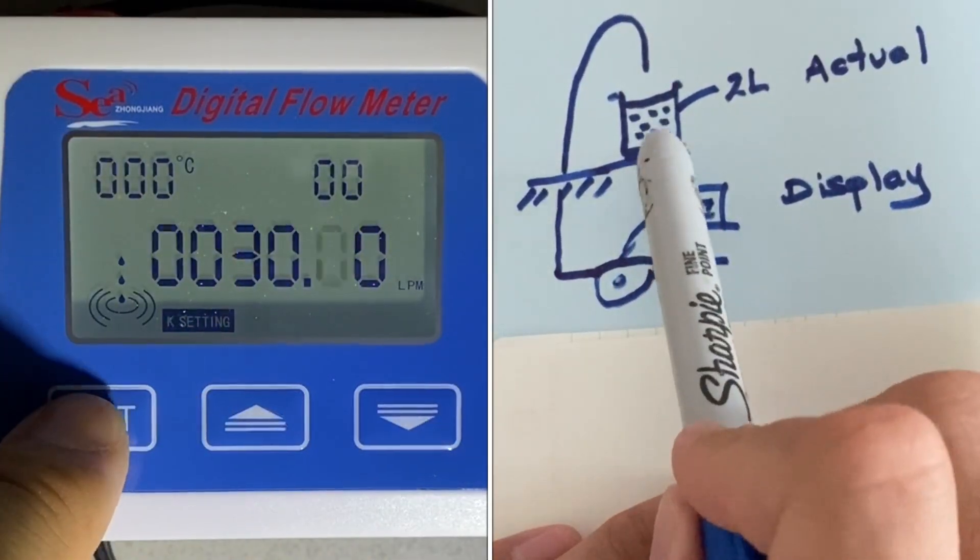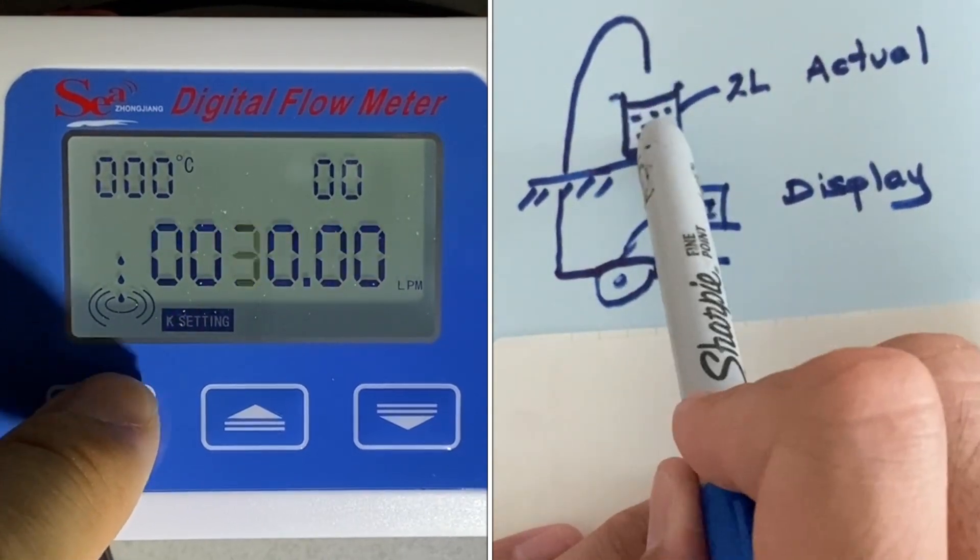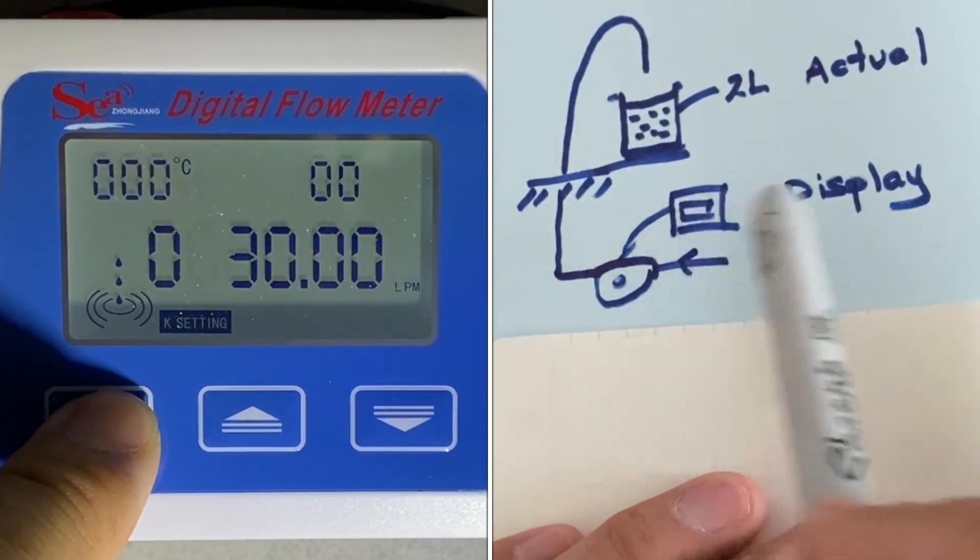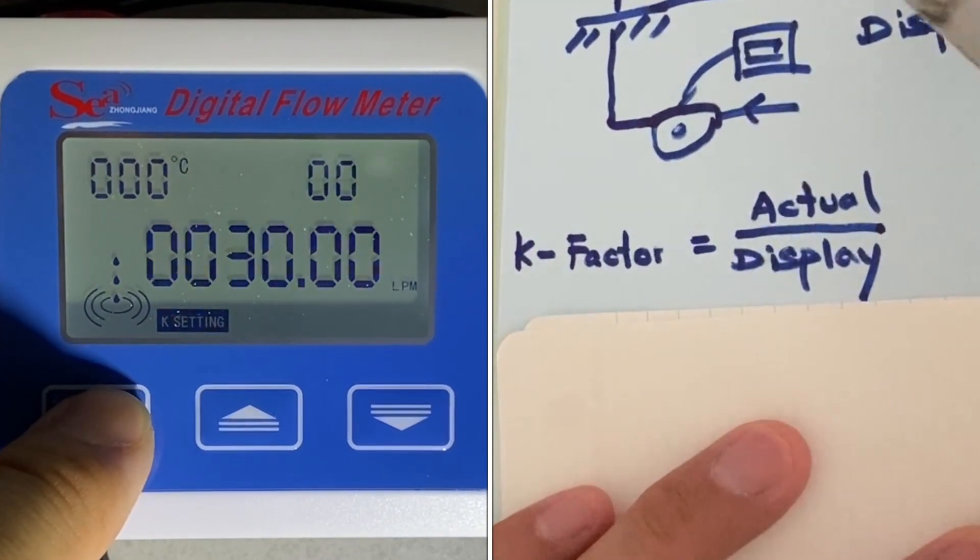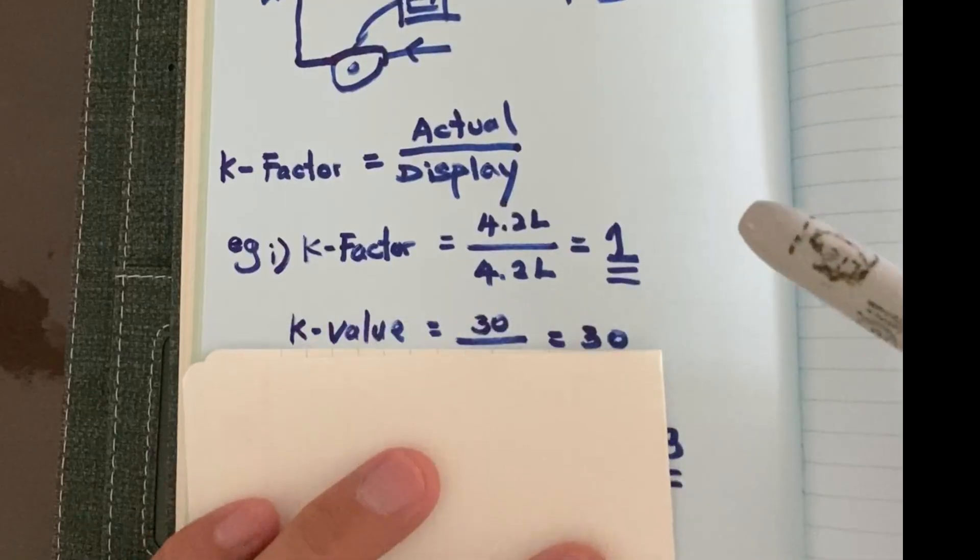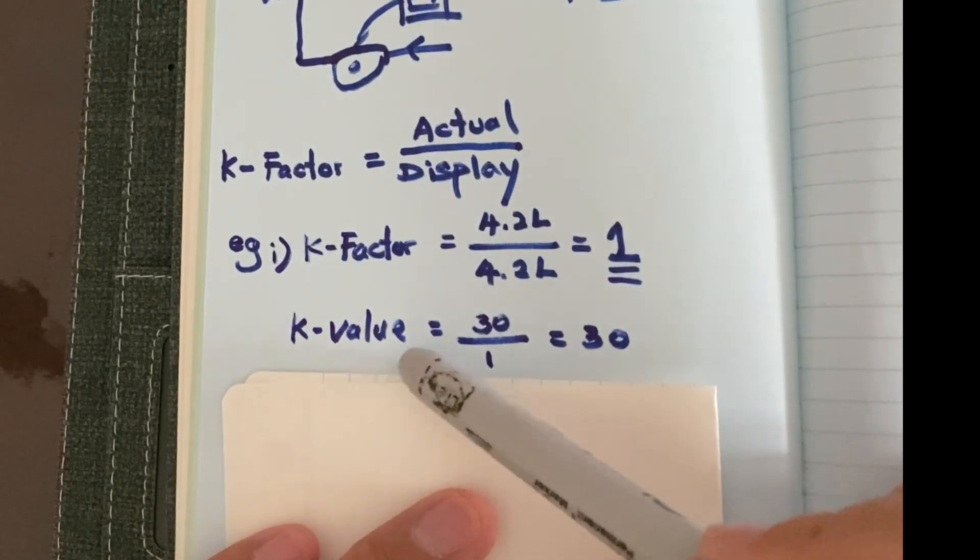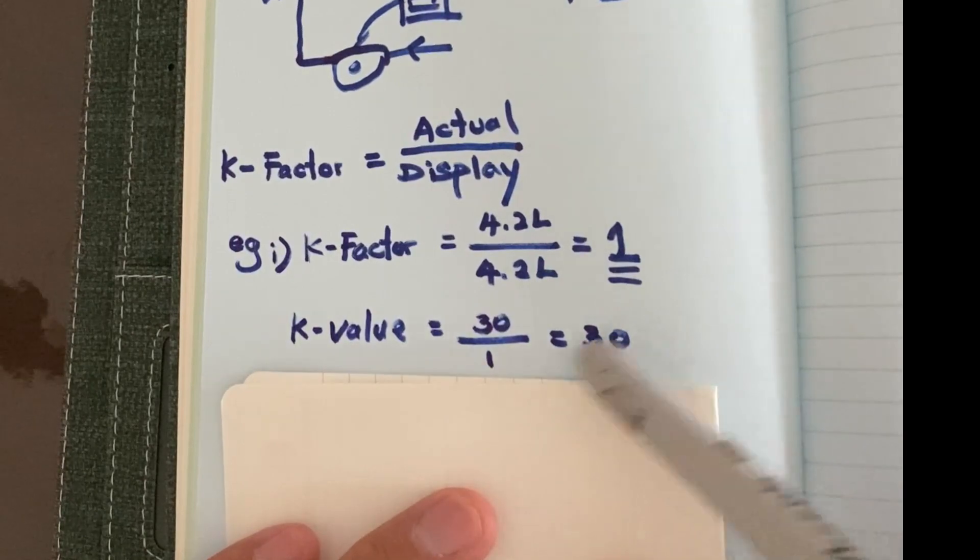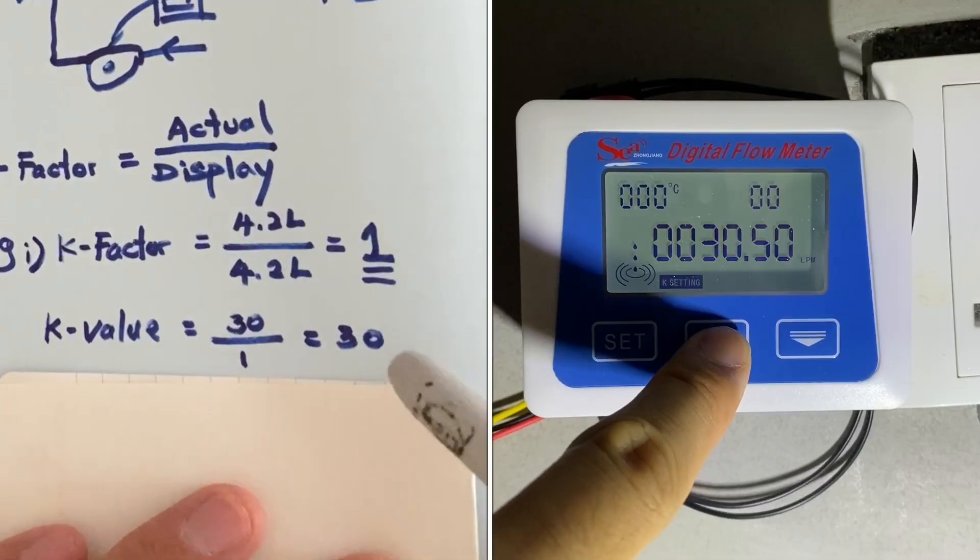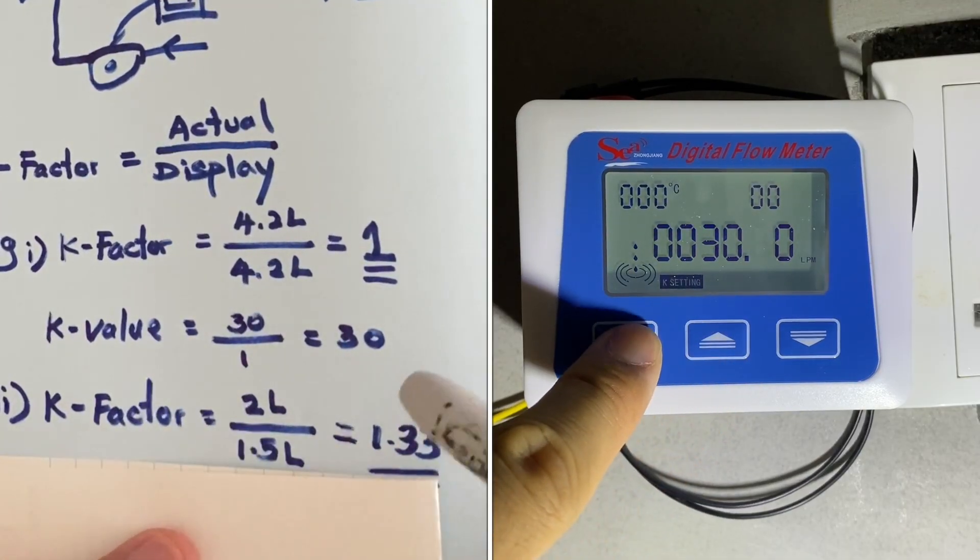Now, the concept goes like this. If I have a 2 liter container, this is the actual volume. And the display volume value, if it's the same 2 liters, actual over display, if you have the same value, then the fraction is 1. Then I just need to divide it by 1, and 30 is correct. By default, it's set at 30.